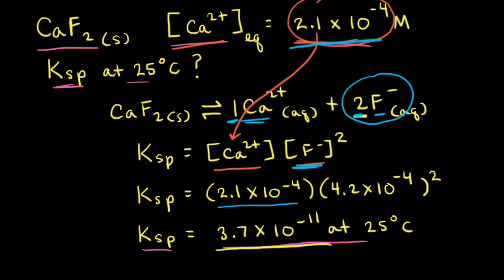Finally, let's think about the molar solubility of calcium fluoride — how many moles of the salt dissolve to form one liter of saturated solution. The mole ratio of Ca2+ ions to CaF2 is 1 to 1, so the concentration of Ca2+ ions in solution, 2.1 times 10 to the negative 4th molar, is also the molar solubility of calcium fluoride. Therefore, we used the molar solubility of calcium fluoride to calculate its Ksp value.